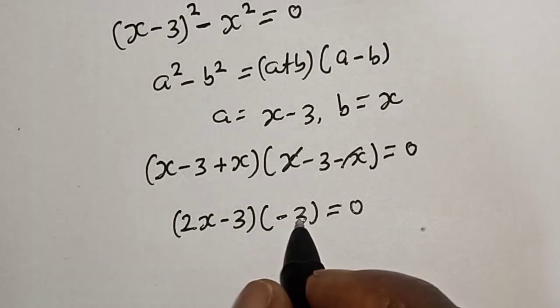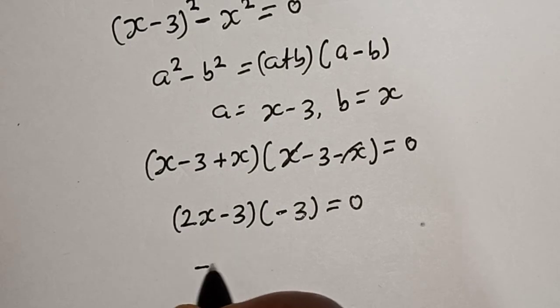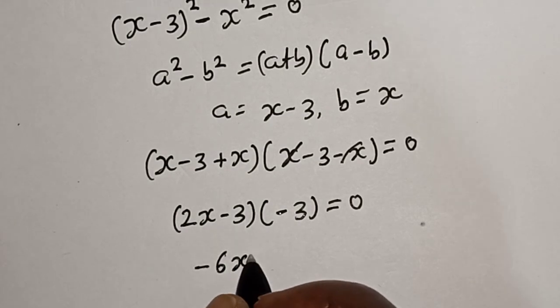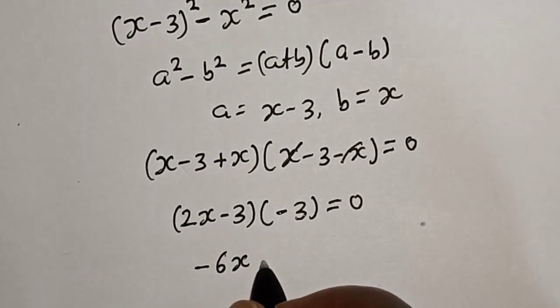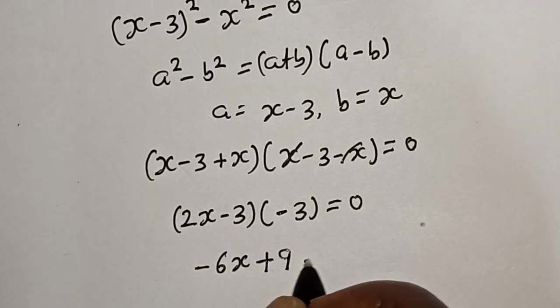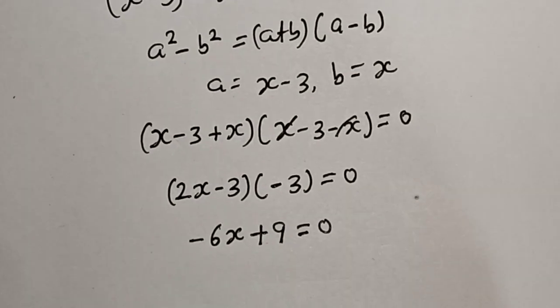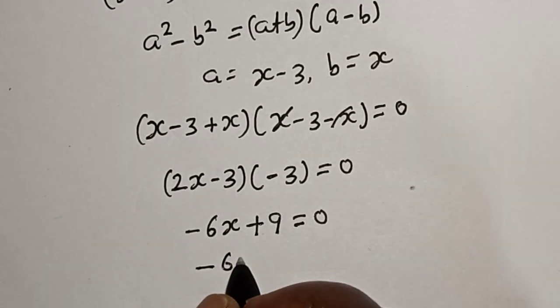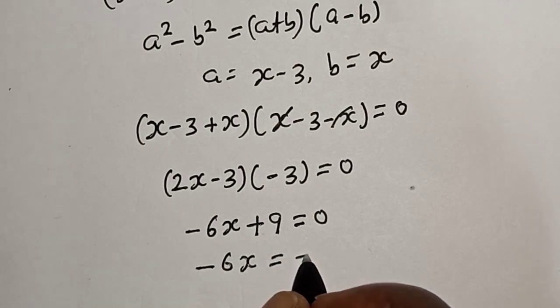2x times minus 3, this is minus 6x. Minus 3 times minus 3 plus 9 is equal to 0. Minus 6x is equal to minus 9.